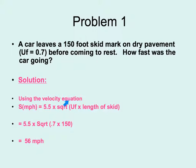We will use the velocity equation where we have our speed in miles per hour equaling 5.5 times the square root of our correction factor times the length of the skid mark. So 5.5 is our standard times the square root of 0.7 times 150, and we would have the car moving at a rate of 56 miles per hour.